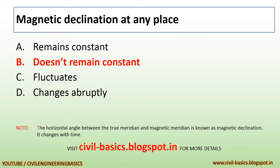Magnetic declination at any place doesn't remain constant. Note: the horizontal angle between the true meridian and magnetic meridian is known as magnetic declination. It changes with time.